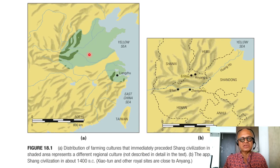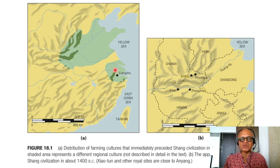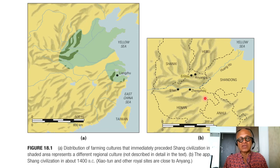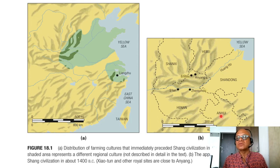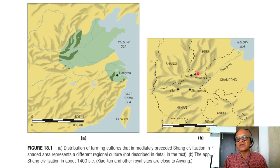Looking at the map here, this shows the distribution of farming cultures that immediately preceded Shang civilization in northern China. Each shaded area represents a different regional culture, which is not described in detail by the book. And here we are looking at the approximate distribution of Shang civilization in about 1400 BC.